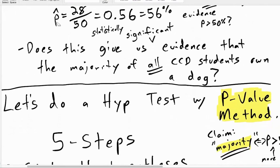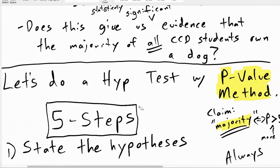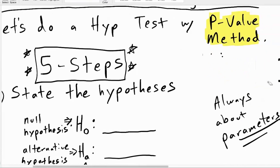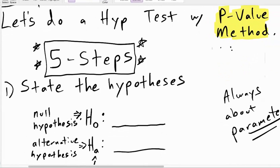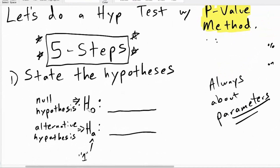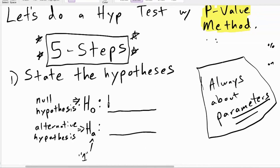The way that I teach the p-value method is that there are five steps. Step one: state the hypotheses — hypotheses is plural. There are two things included in this step: stating what's called the null hypothesis and the alternative hypothesis. There are symbols associated with those. You might see the null hypothesis given as H with a 0 or O, and the alternative hypothesis with H sub A. Your book might use a 1 there. The hypotheses are always about parameters. Both the null and the alternative will involve P here because we're asking about a parameter.